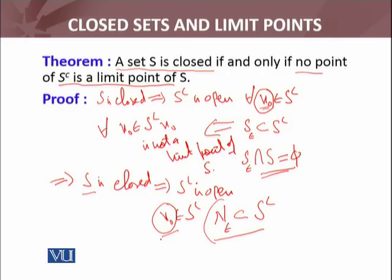Now x naught was not any particular element of S complement, it was arbitrary. It means every point x naught is an interior point of S complement, which is the definition of an open set.